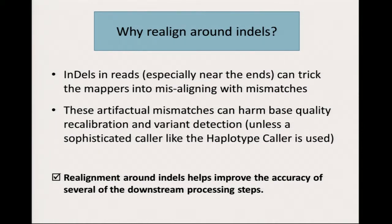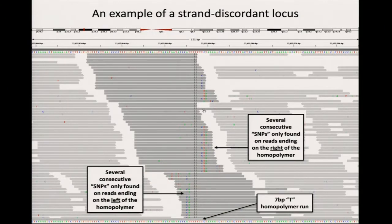These artifacts may affect tools that assume the mapping is correct. This is particularly true for the base quality recalibrator that comes after in the pipeline. There may be some other tools that are less affected, like the haplotype caller, which tries to combine genotyping and realignment at the same time. But it's still good to fix these problems for tools that depend on the alignment being correct.